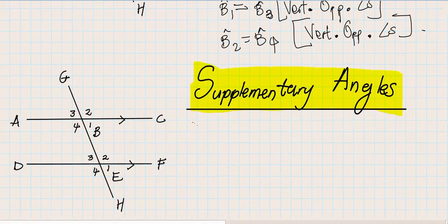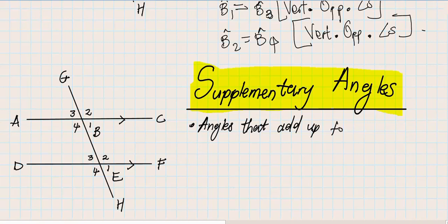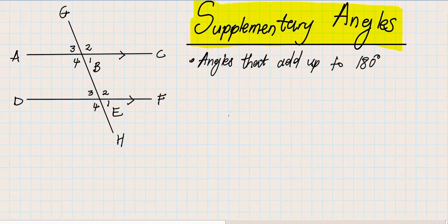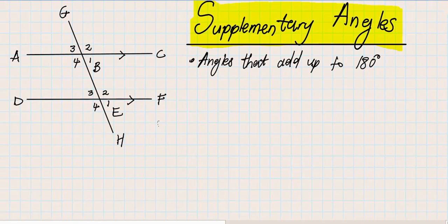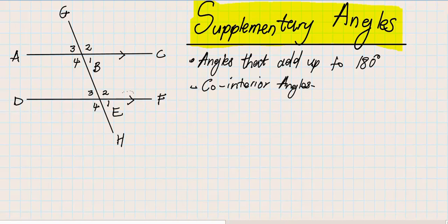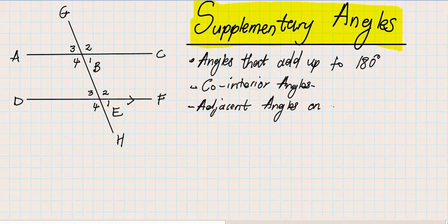When we speak about supplementary angles, we are talking about angles that add up to 180 degrees. A mistake many people make is thinking supplementary angles are only adjacent angles on a straight line — that is not the case. We have two types: co-interior angles, and adjacent angles on a straight line.